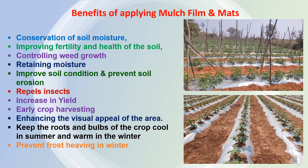There will be control of weed growth and it will minimize the crop and weed competition. There will be retaining of moisture for a longer period. Improvement in soil condition and it will prevent soil erosion also. Mulching repels insects, so in other words it is controlling the multiplication of insects.